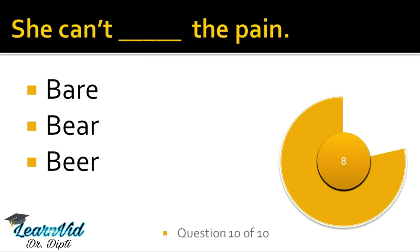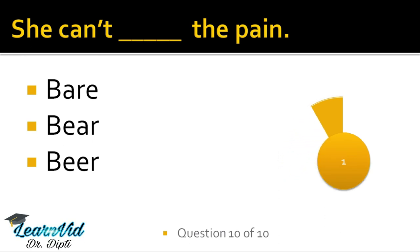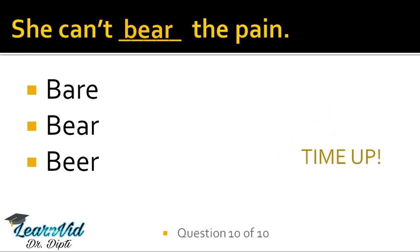She can't dash the pain. The correct option is B-E-A-R, bear. The first option, B-A-R-E, means uncovered — like bare hands, uncovered hands, or bare feet, nange pao. Second is B-E-A-R, which has two meanings: one is bhaalu — a bear — and the other is to tolerate, to endure. Like I can't bear him anymore — mai usko aur sehen nahi kar sakta. And the last one is B-E-E-R, which is an alcoholic drink — a type of sharaab.